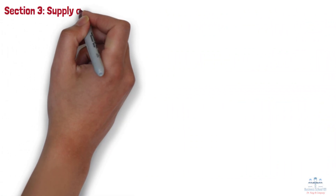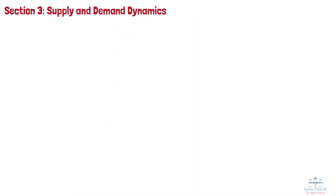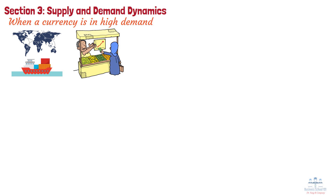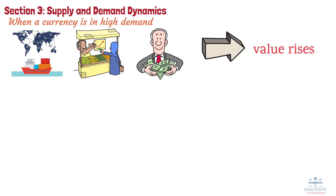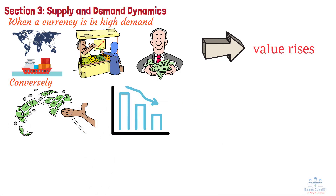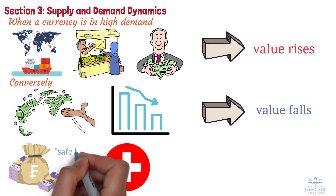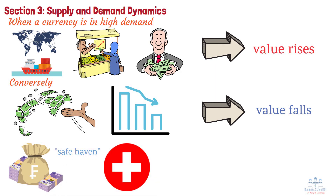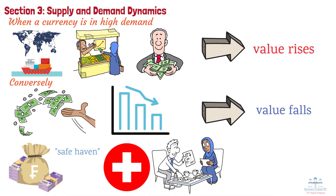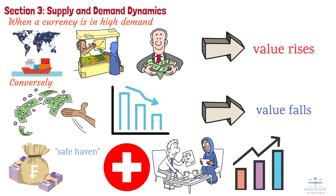Section 3: Supply and Demand Dynamics. Just like any other commodity, currencies are subject to supply and demand. When a currency is in high demand due to factors like strong exports, high interest rates, or investor confidence, its value rises. Conversely, if there is a surplus of a currency or declining demand, its value falls. For example, the Swiss franc (CHF) is often in high demand during periods of global uncertainty because Switzerland is considered a politically and economically stable country. This stability makes the franc a safe haven currency, attracting investors during crises or market volatility. As a result, the franc tends to appreciate in value when global markets are unstable.